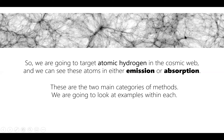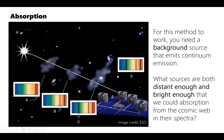We're going to target atomic hydrogen to observe the cosmic web, and we know we can see it in either emission or absorption — those are the two main categories. For the rest of the talk I want to look at the methods we use in emission and absorption to trace the cosmic web, starting first with the absorption methods.